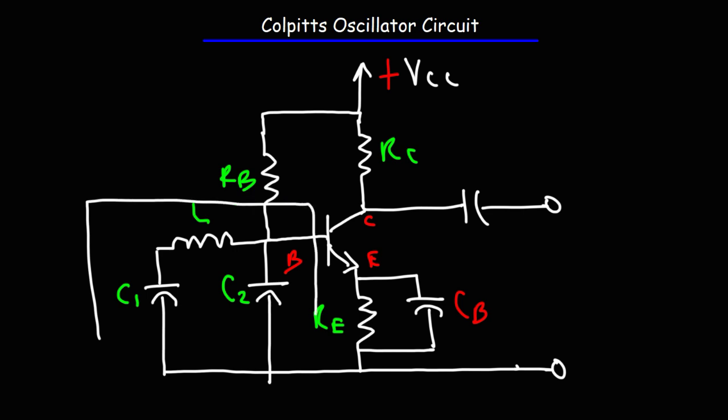These two capacitors and the inductor form the LC network that controls the frequency of the oscillations. Keep in mind, whenever you have a capacitor and an inductor next to each other, they're constantly transferring energy back and forth. As the capacitor charges, the inductor discharges, and energy is constantly transferred between the electric field of the capacitor and the magnetic field of the inductor.